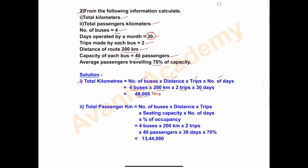Next we will calculate the total passenger kilometers. The formula is: number of buses × distance × trips × seating capacity × number of days × percentage of occupancy. In total kilometers we just took number of buses, distance, trips, and number of days. But for total passenger kilometers, we also have to include seating capacity and percentage of occupancy.